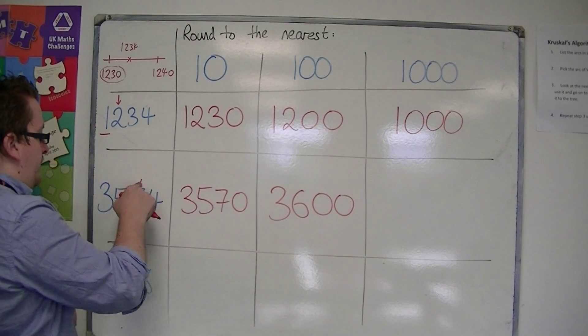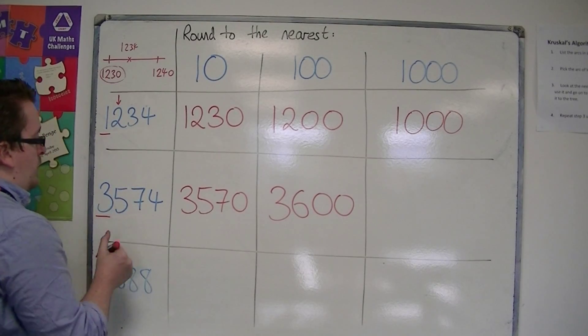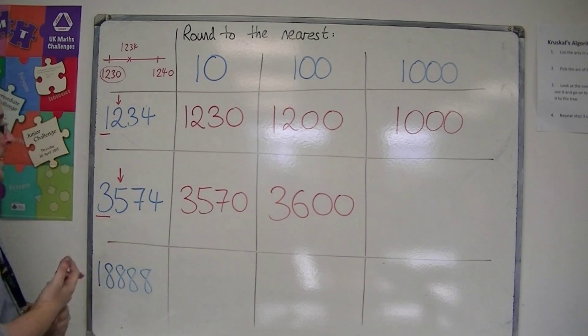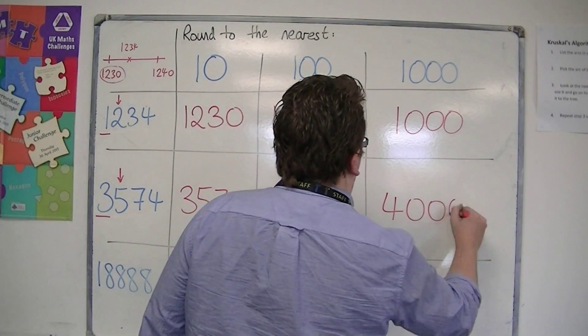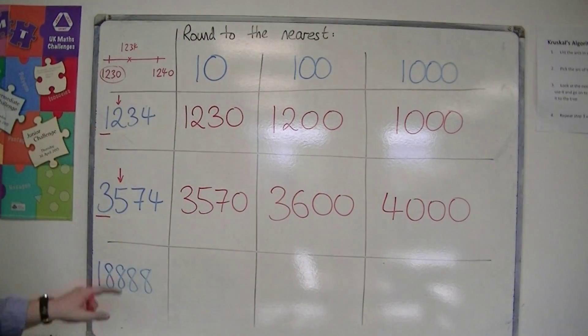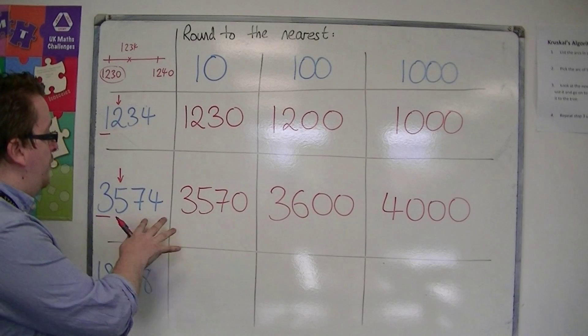To the nearest thousand, I look at the three. Okay, one to the right, so this would round up now to 4,000. So the nearest thousand, it's either going to be 3,000 or 4,000. So it's 4,000.